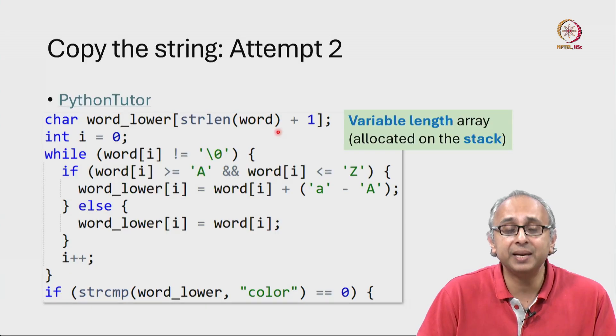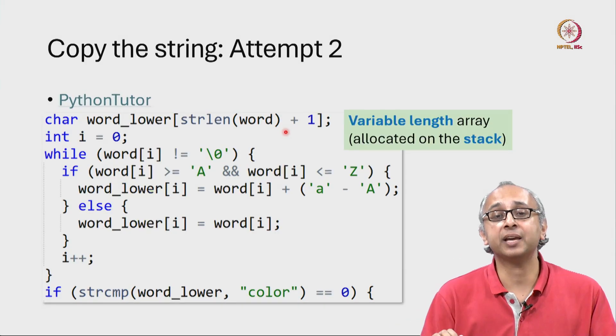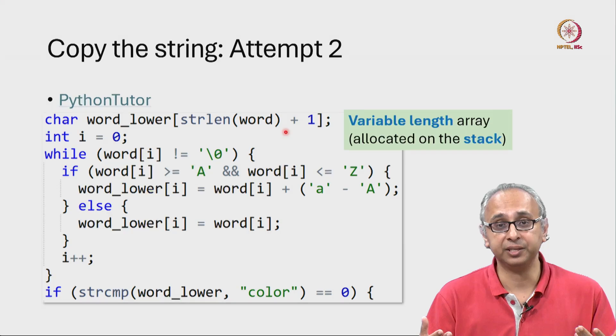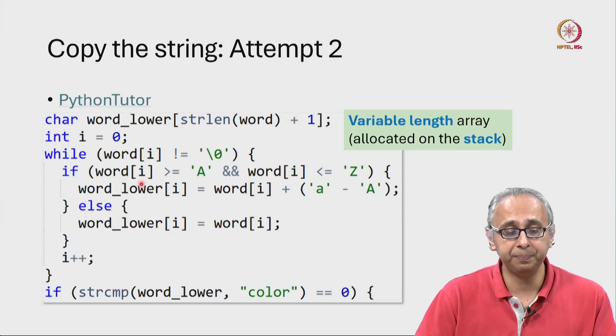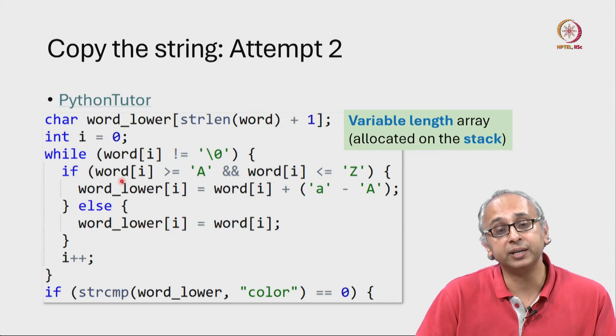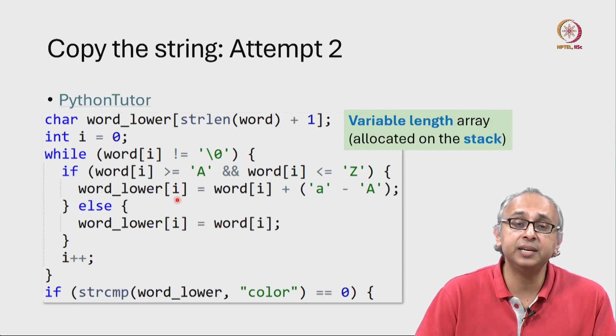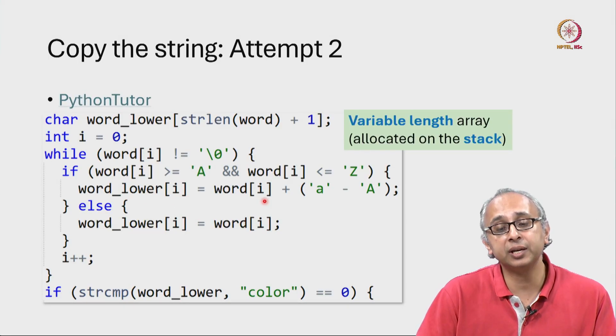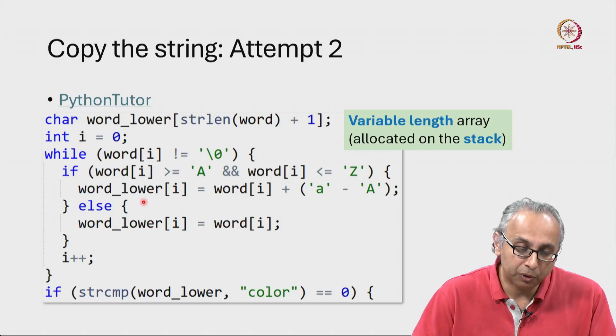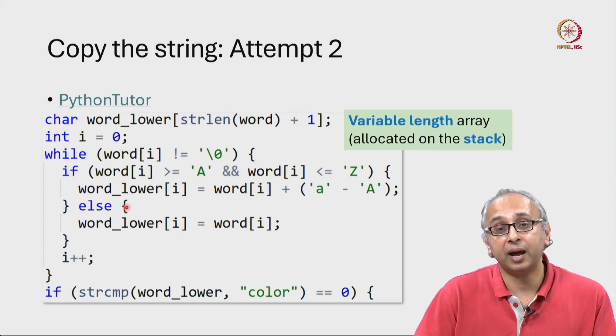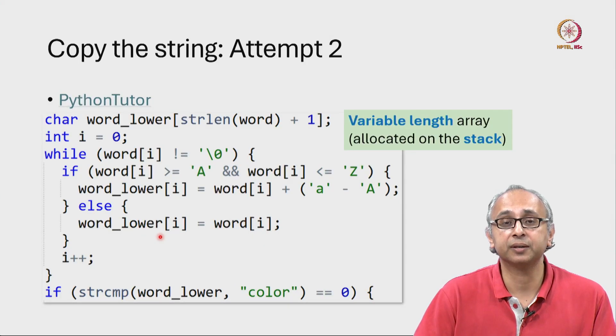Now remember this is merely allocating this array. The values inside that are uninitialized. So now we have a while loop that goes through each index i and if the original word at that index is an uppercase letter then the value at index i in word_lower is that original letter plus this difference and that will create the lowercase version of that letter. But now we also need an else case. So if it's not an uppercase letter then basically make a copy of it in the lowercase version of the word.